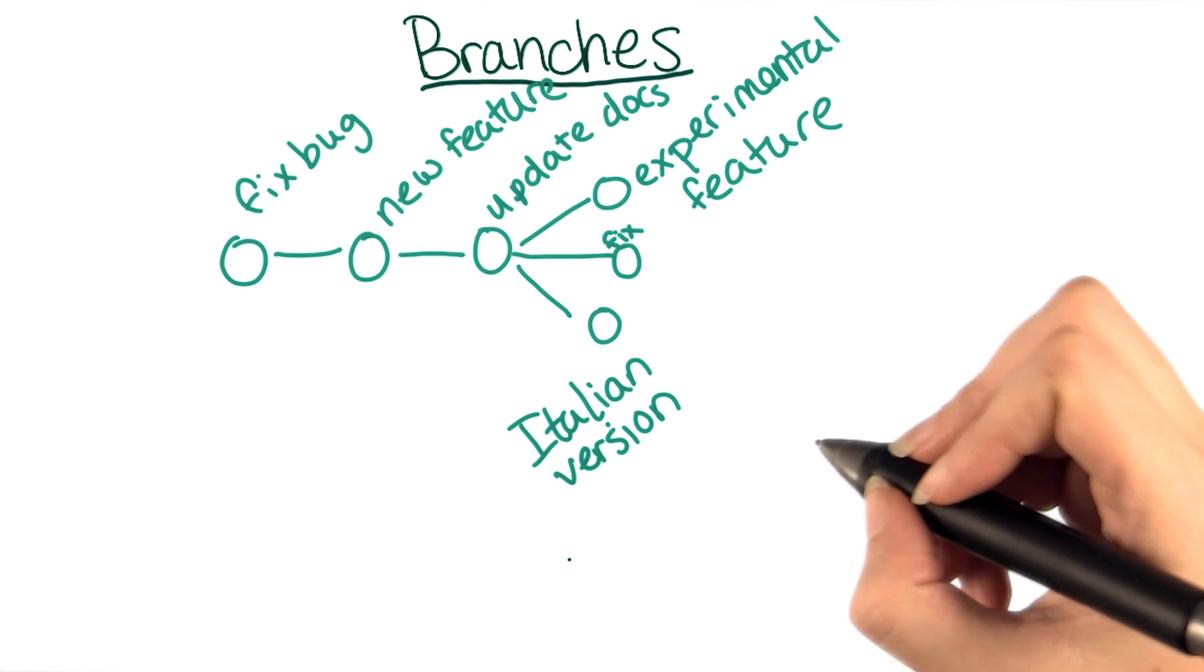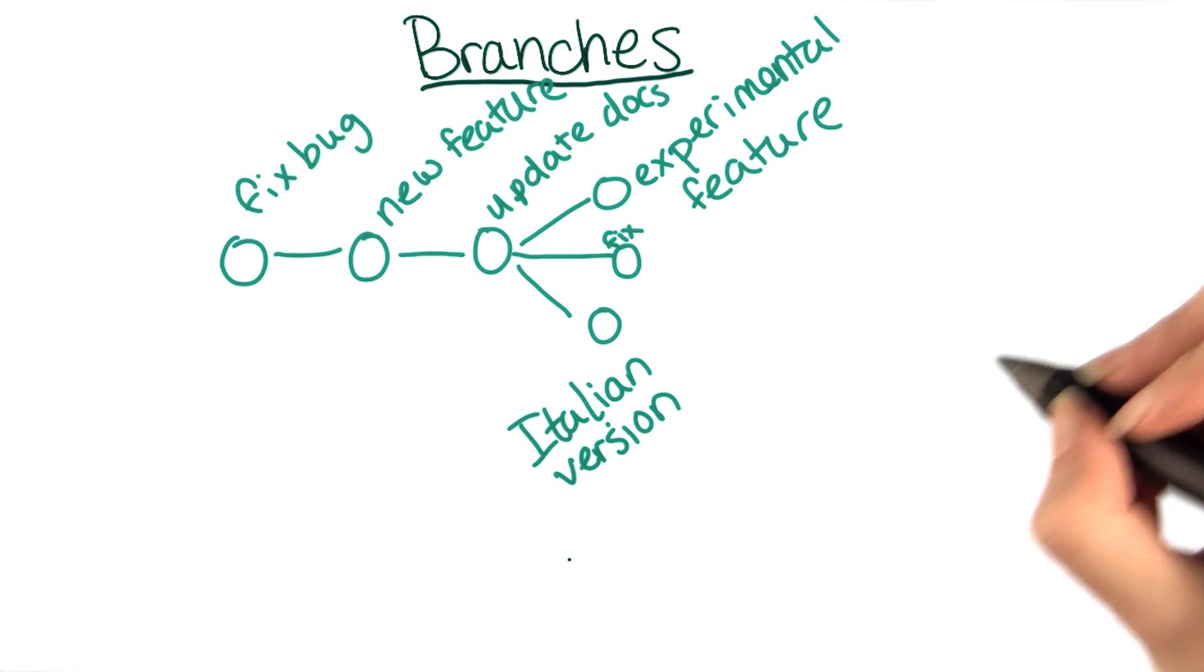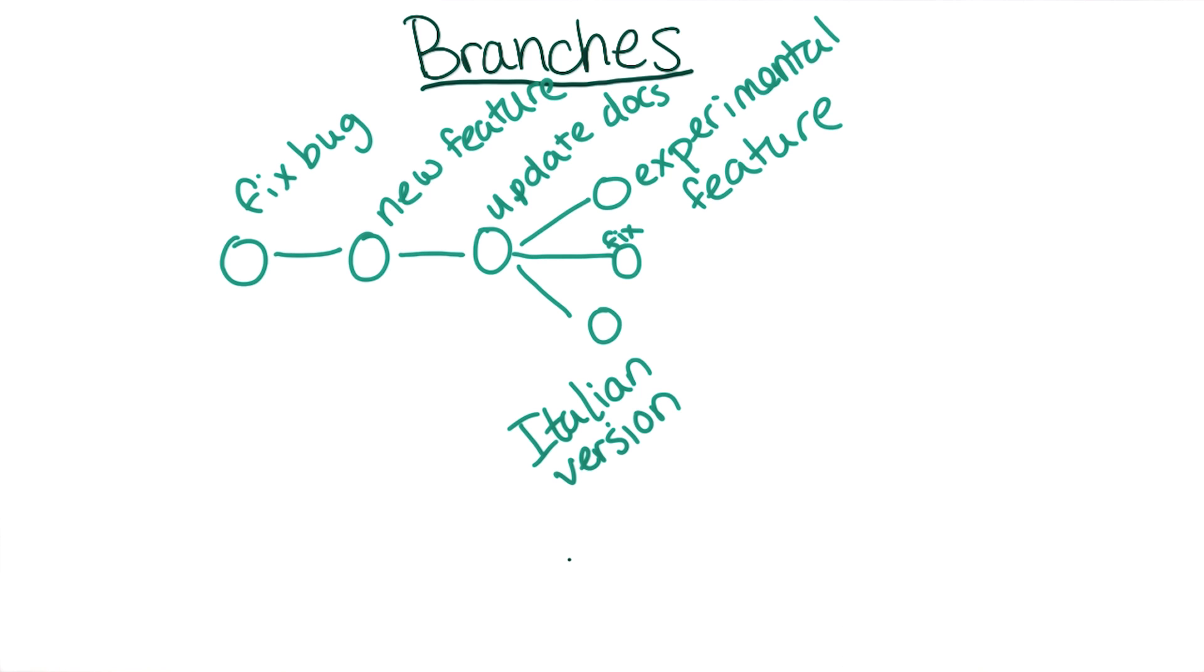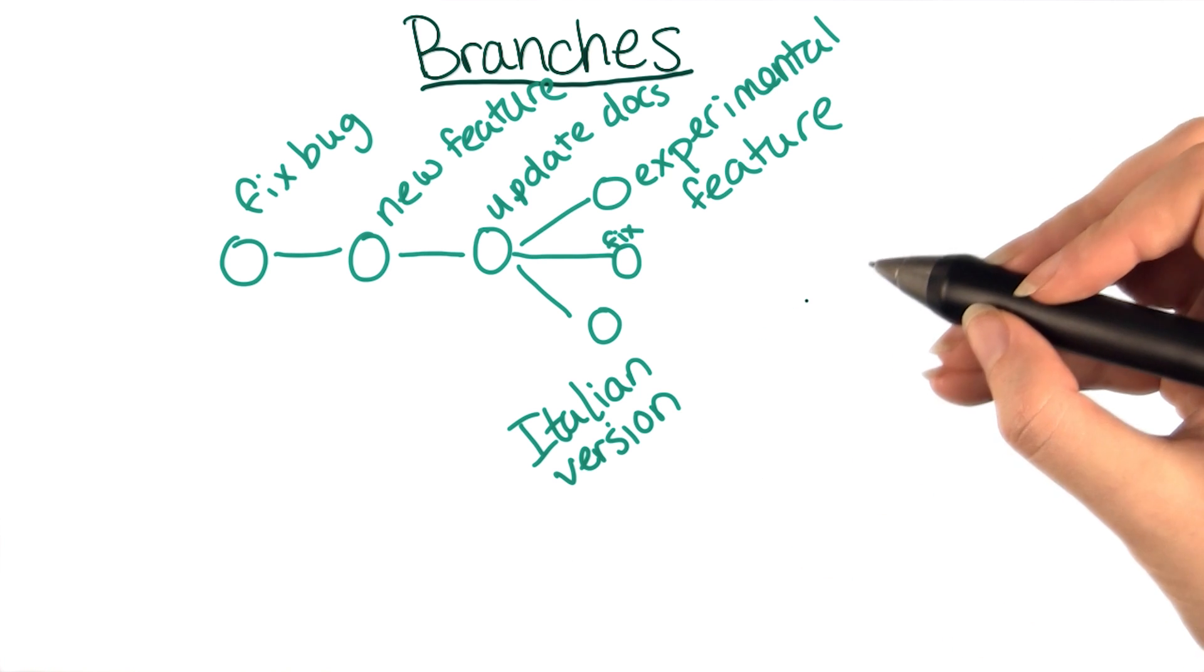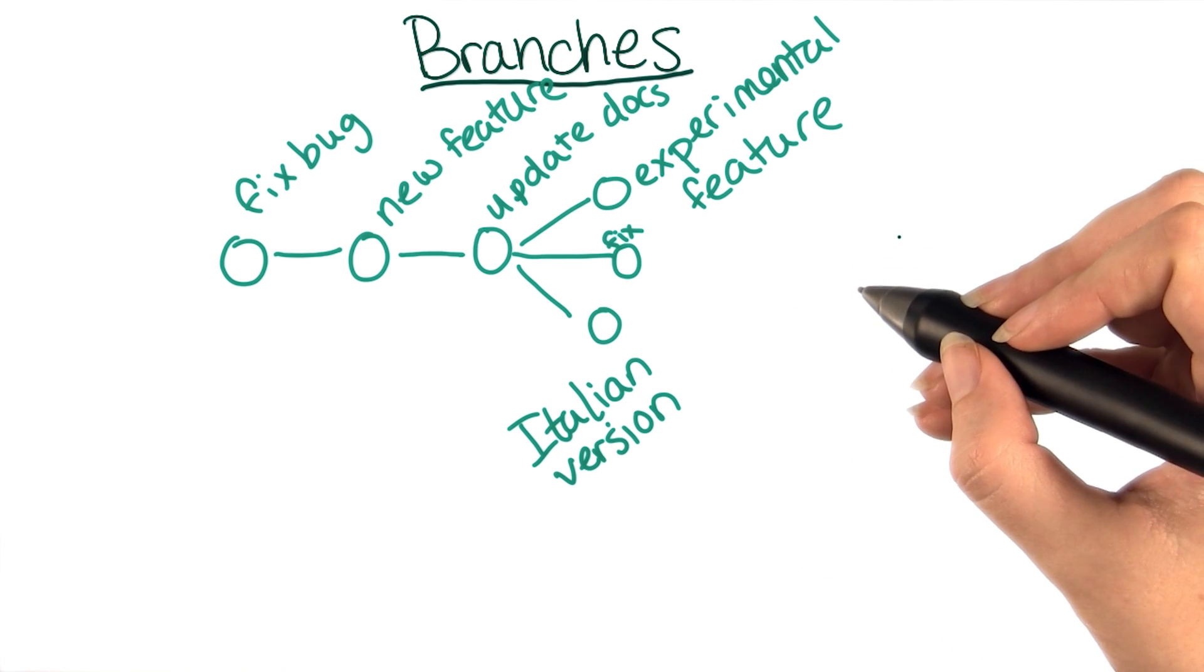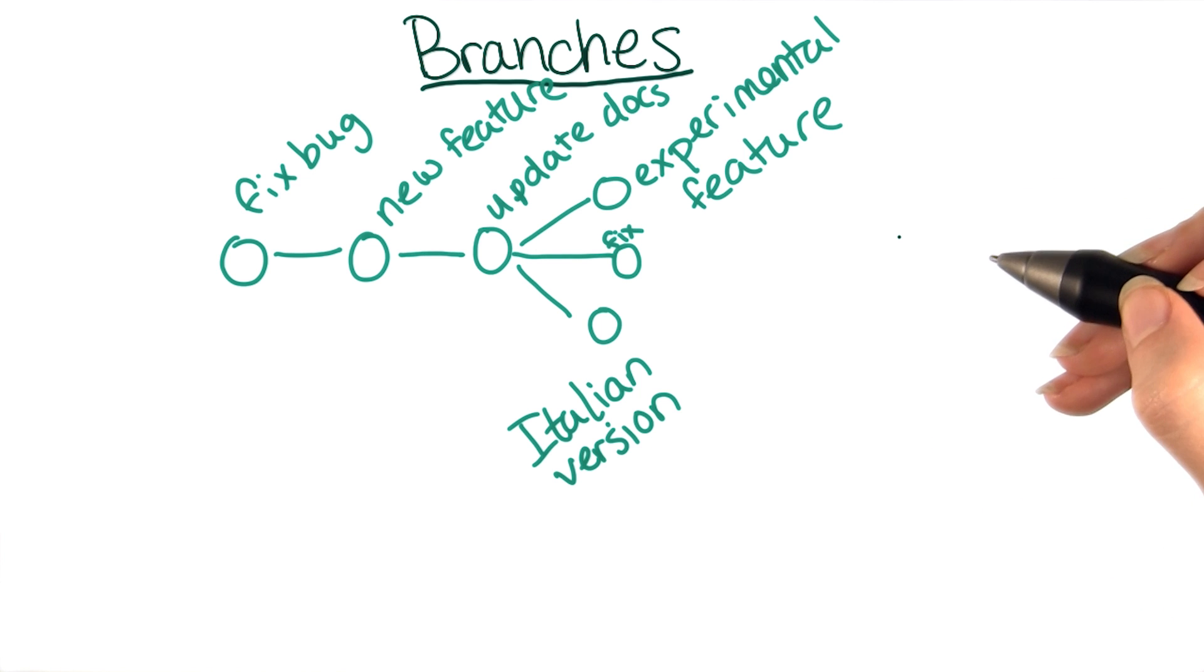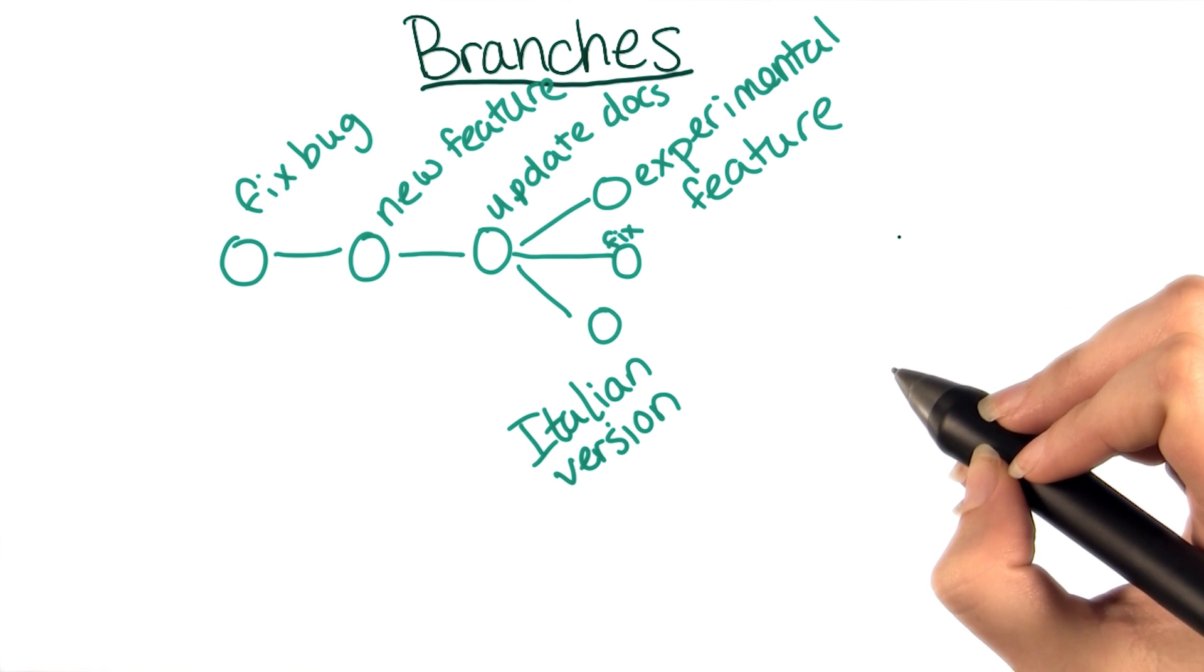So far, you have always either been in a detached head state or on the master branch, which git creates for you. It's possible to check out a branch in the same way that you checked out commits in the past, except with the hopefully human readable branch name, rather than an unpronounceable series of characters.